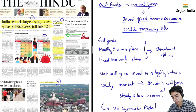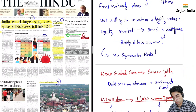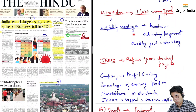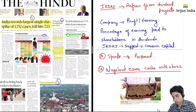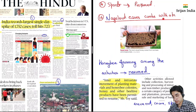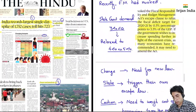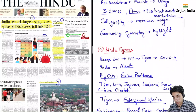Gilt fund, monthly income — ismein abhi systematic risk nahi hai. Then weak global cues hai, MSME ke dues hai, liquidity shortage hai, IRDAI ne refrain kiya hai from dividend payout. Then sports postpone hai, aur Nagaland eases curbs — yeh honey ke baare mein hai, resume hua hai. So we are going to read about all these articles in the next thirty to thirty-five minutes. So let us start.